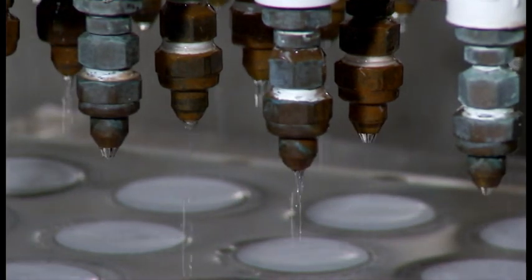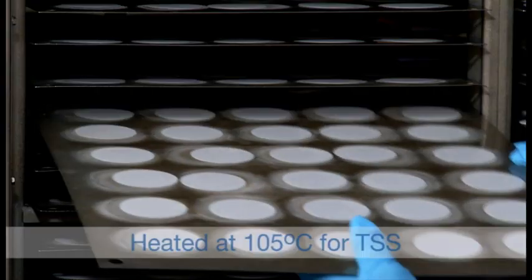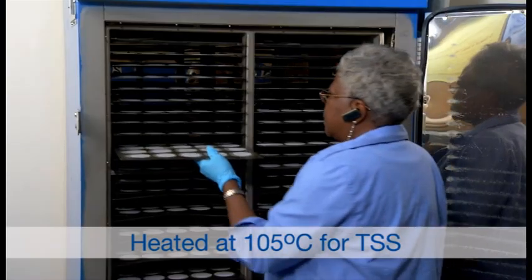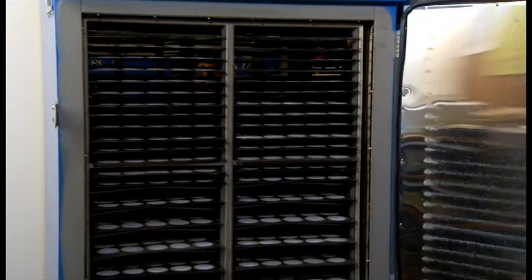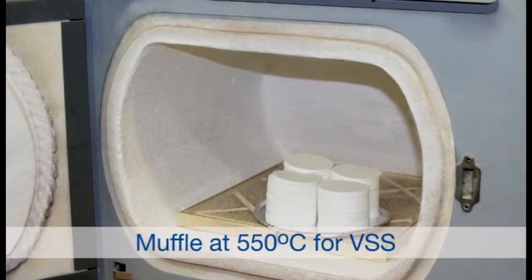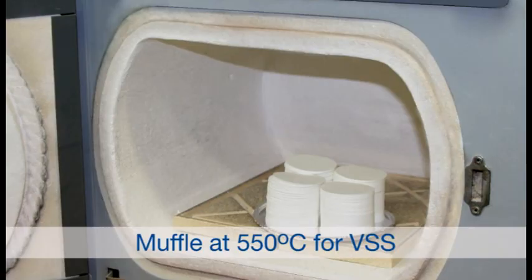The filters are removed from the washing station and placed in a convection oven at 105 degrees Celsius until perfectly dry. For volatile ProWeigh filters, they are transferred to a muffle furnace at 550 degrees Celsius for 15 minutes.